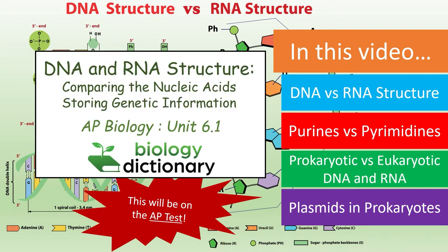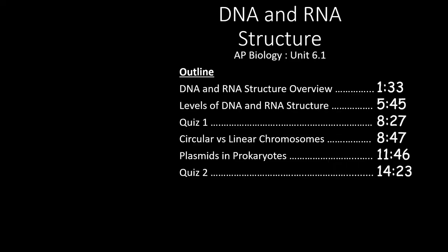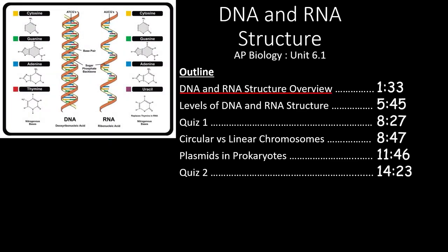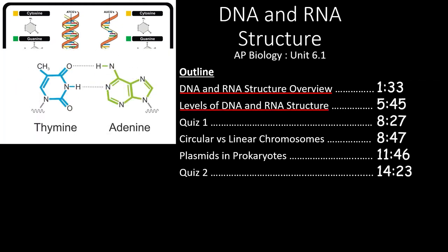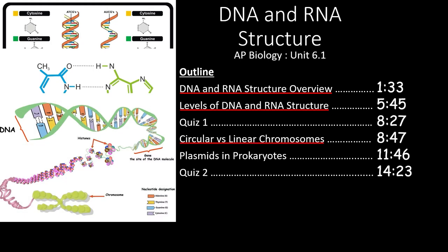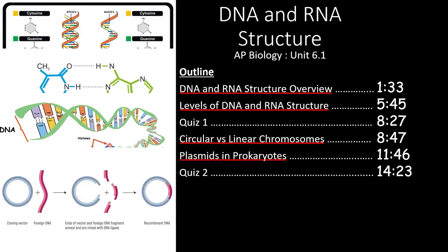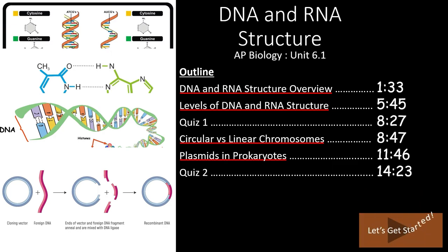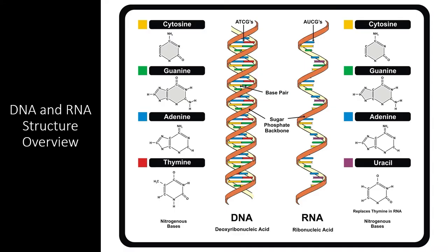This information will definitely be on the AP test, so follow along as we cover everything you need to know about DNA and RNA structure. In this video, we'll look at section 6.1 of the AP Biology curriculum. We'll start by analyzing DNA and RNA structure in general, then take a closer look at the different levels of structure. After the first quiz, we'll see the difference between circular and linear chromosomes. Finally, we'll see what plasmids are and how they work.